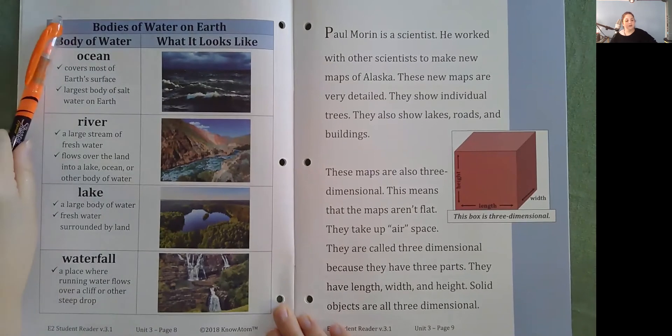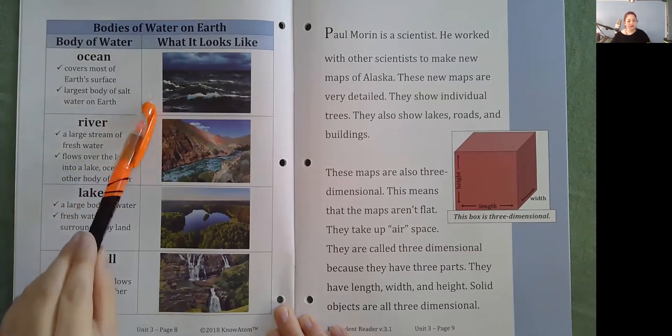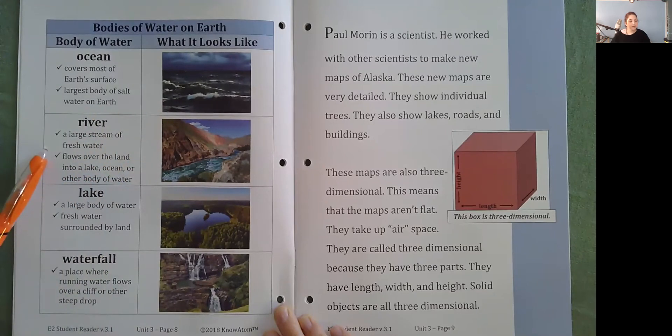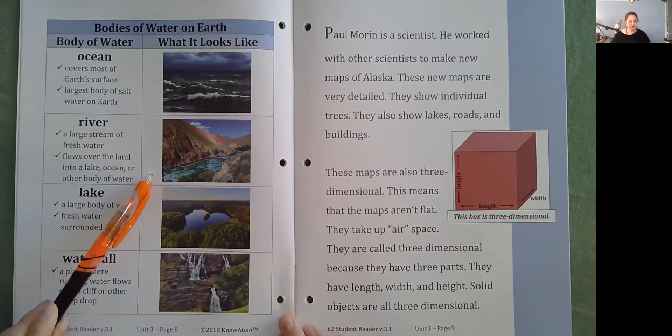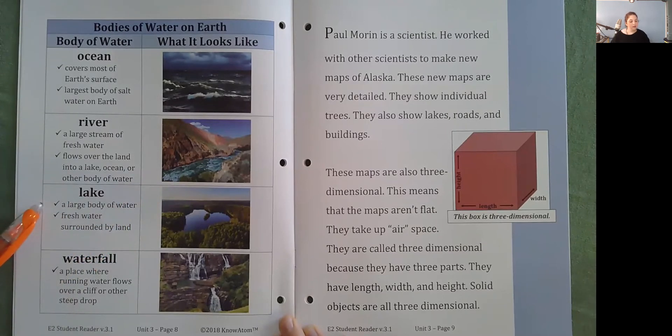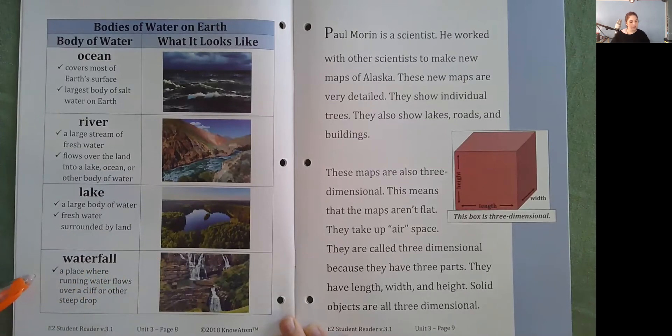Bodies of water on Earth. An ocean. Covers most of Earth's surface. Largest body of salt water on Earth. River. A large stream of fresh water flows over the land into a lake, ocean, or other body of water. Lake. A large body of water. Fresh water surrounded by land. Waterfall. A place where running water flows over a cliff or other steep drop.